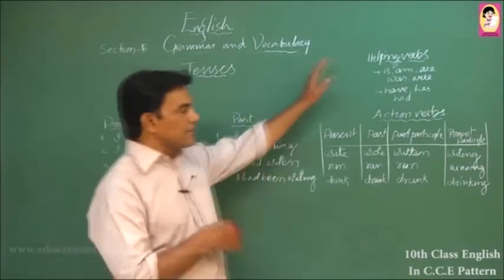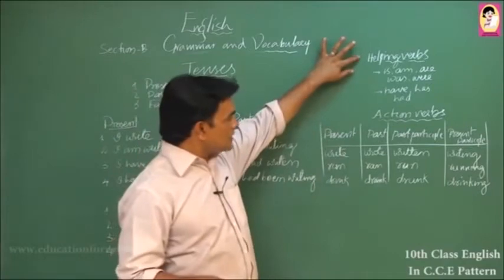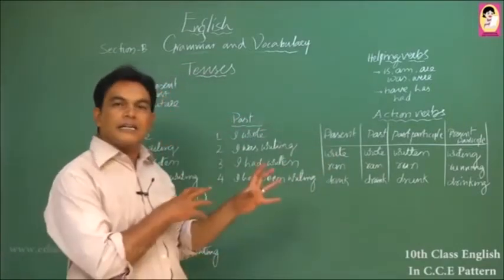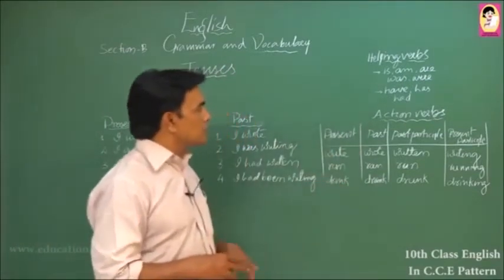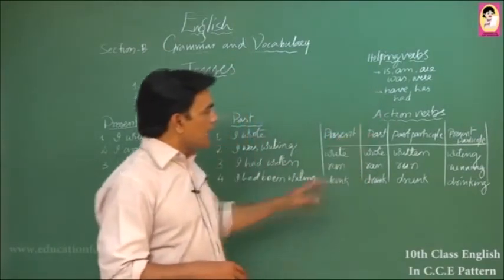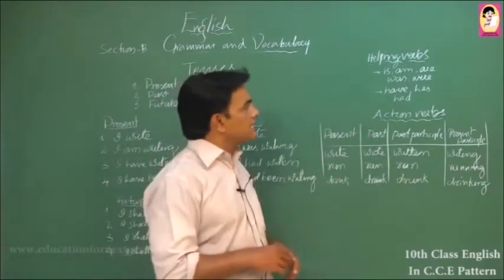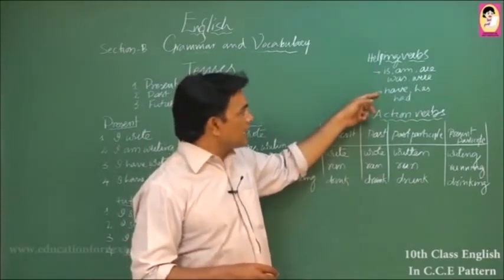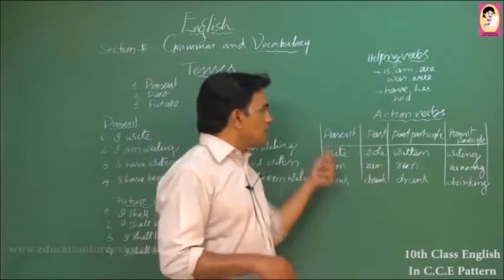Before we start with tenses, you must recollect the types of verbs. There are two: helping verbs and action verbs. Helping verbs include is, am, are — which are present — and was, were — which are past. Then there is the have-form: have and has are present, and had is past.